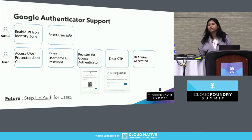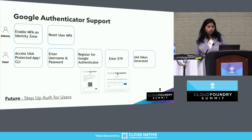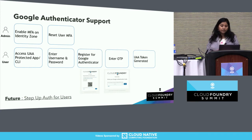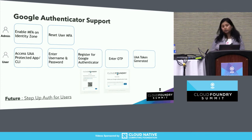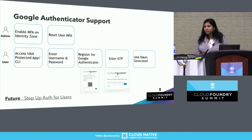From an admin perspective, to enable multi-factor authentication you do so at an identity zone level. An identity zone is a tenant in UAA. When you deploy UAA you get a default identity zone, but you can create more tenants or identity zones. MFA, or Google Authenticator as a form of MFA, can be turned on at identity zone level. Administrators can also reset users' MFA — in case of a lost or compromised device, an administrator can go in and reset the user status so they can re-enroll for MFA.